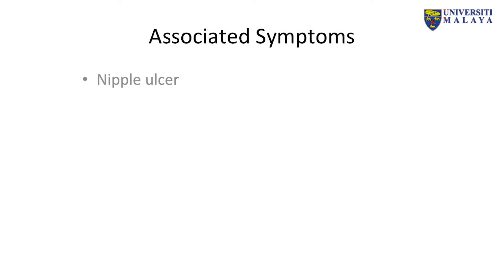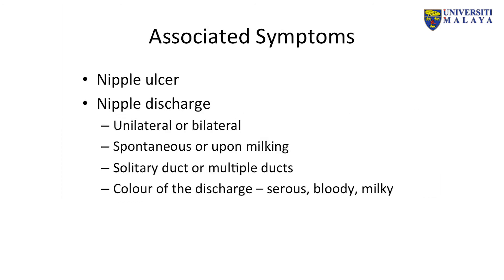Other than the breast lump, we will enquire about the nipple. Is there any nipple ulcer or nipple discharge? If there is discharge, we need to know in detail: is it unilateral or bilateral? Is it spontaneous or only upon milking? Are solitary or multiple ducts involved? What is the colour — is it serous, bloody, or milky?